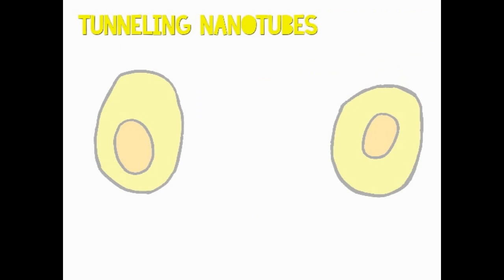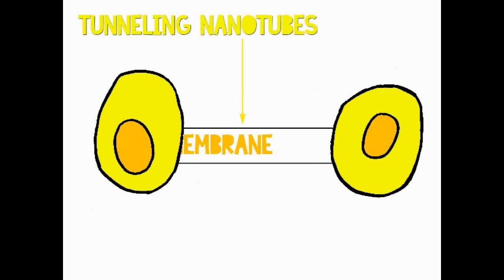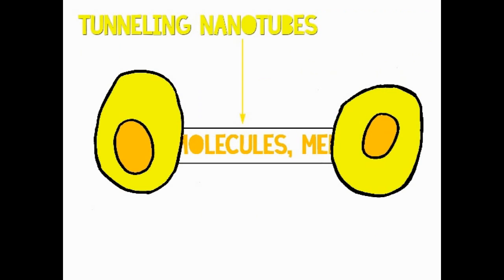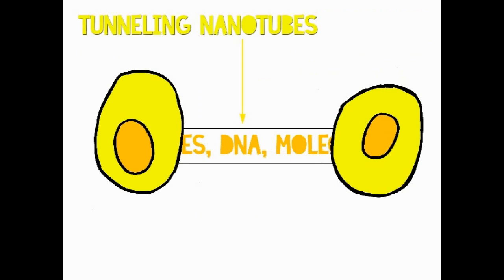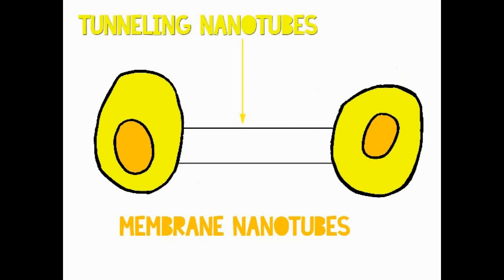Tunneling nanotubes, or TNTs for short, are long thin plasma membrane extensions which connect two distant animal cells. They allow for cell-to-cell transfer of plasma membrane components, cytosolic molecules, nucleic acids, and even organelles within the two cells. They are also known as membrane nanotubes and membrane nanotubules.